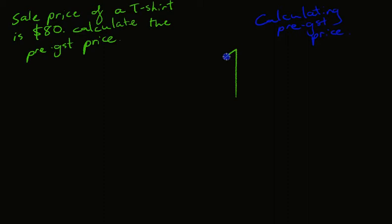Okay, so the sale price of a t-shirt, I'm just going to draw my t-shirt in here real quick. That's a terrible t-shirt. The sale price of a t-shirt is $80. Calculate the pre-GST price.